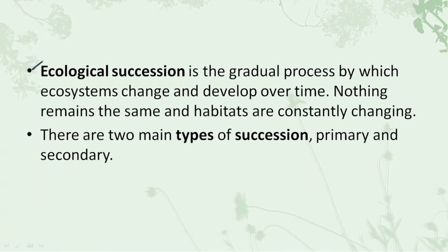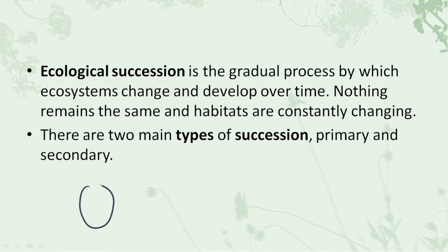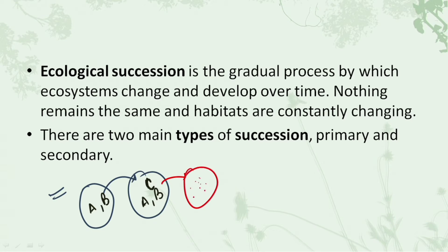Ecological succession is a gradual process by which the ecosystem changes and develops over time. In a single area, there may be many species present. As a result of new species arriving — for example, now having three species — the habitat of this particular area changes, and as the habitat changes, the species there may also change. So we can say that habitats are constantly changing.